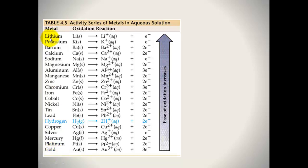We've done the experiment — we put lithium in water and it reacted vigorously. Why? One reason is it's only got one electron in its outside shell. Potassium as well — another one that reacts quite vigorously. Gold, platinum, silver — this is what your jewellery is made of. These metals don't react very readily at all.